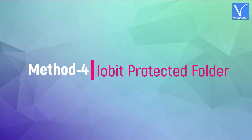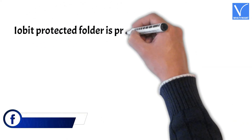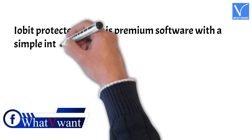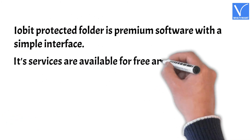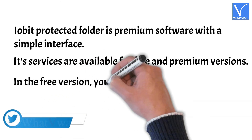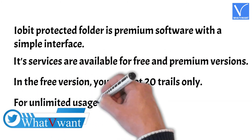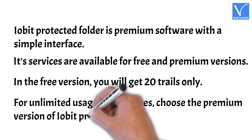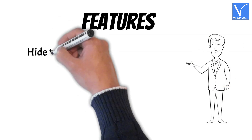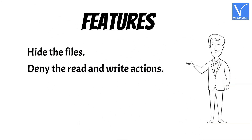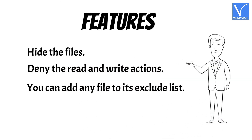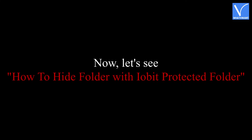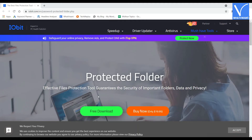Method 4: iObit Protected Folder. iObit Protected Folder is premium software with a simple interface. Its services are available in free and premium versions. In the free version, you will get 20 trials only. For unlimited usage and features, choose the premium version of iObit Protected Folder. Features include: hide files, deny read and write actions, and you can add any file to its exclude list. Now let's see how to hide a folder with iObit Protected Folder. Firstly, download the iObit Protected Folder application from its official site — check the description for the website link.